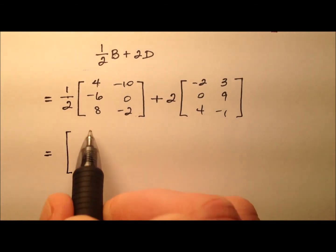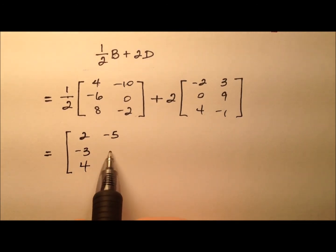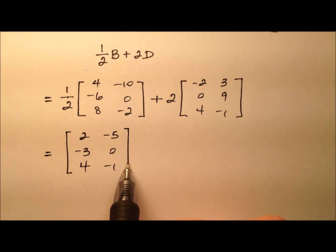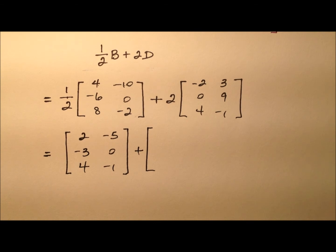So 1 half of 4, that's going to be 2, and we'll just move right on down, negative 3, 4, negative 5, 0, and negative 1. So now we have effectively taken half of all of these terms.